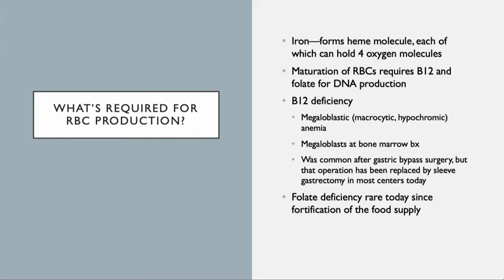What's required for having red blood cells? We need iron, because all the red blood cells are made up of hemoglobin, and hemoglobin has iron. We need B12 and folate to make the cells correctly — they're sort of the instruction set, the catalysts that make sure that everything is formed correctly. If they aren't present, B12 deficiencies are more common today than folate deficiencies.